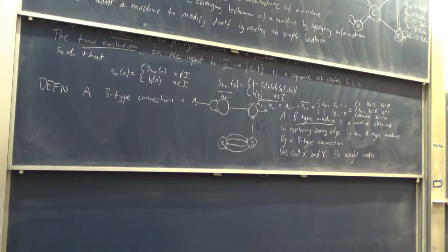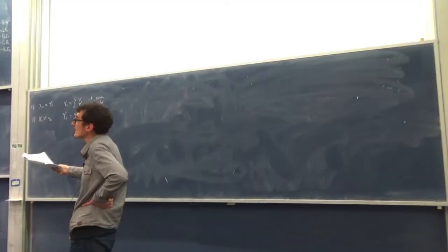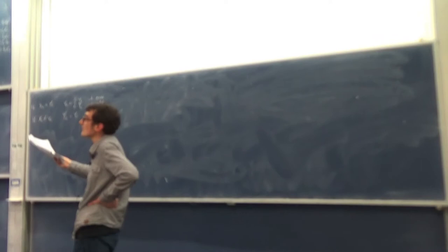At this point I'm going to diverge from the paper slightly and give a more modern treatment of how you train a B-type machine, using a greater degree of control in the feedback — in that you can give it a real number for each of its outputs rather than just yes, this output is good, or no, this output is bad.